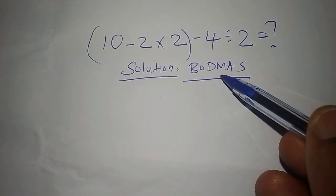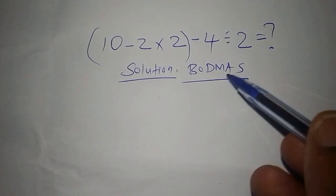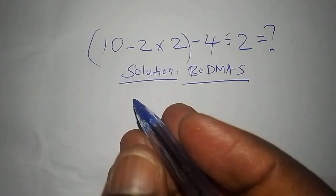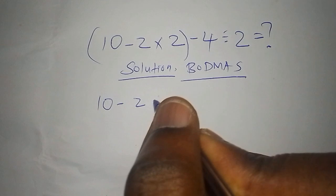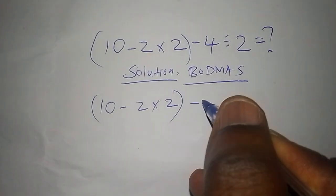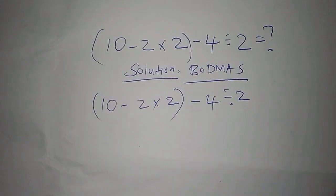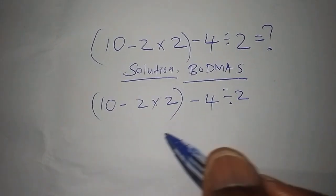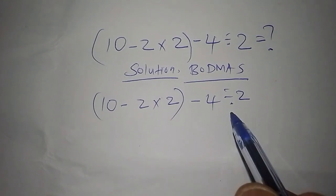Let's now write the math problem that we want to solve. We have 10 subtract 2 multiply by 2, then all of them in brackets, subtract 4 divide by 2. That is the math we want to solve. What we do first is look at B if B is present—that is the bracket. We shall be forced to work out the bracket first before anything else.